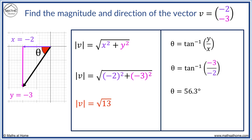the direction of the vector is always from the positive x direction as shown by the black arrow. We travel 180 degrees from the positive x direction until we reach theta. We add 180 to 56.3 to obtain 236.3 degrees.